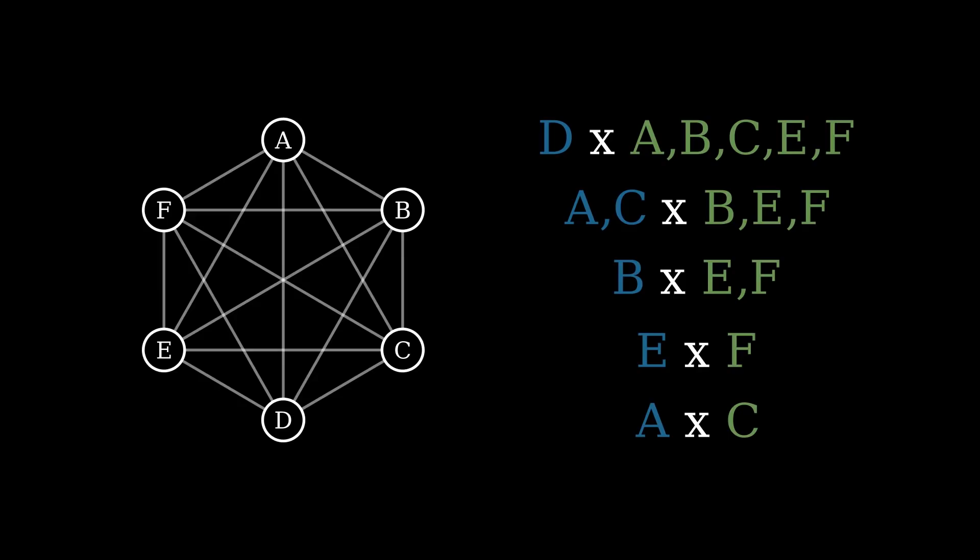The question we ask is simple. Can we do this with less than five battles? The Graham-Pollack theorem says we can't. That if you had N nations, you would need N minus 1 battles.